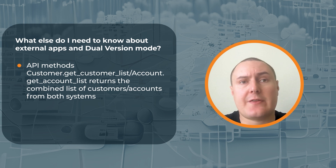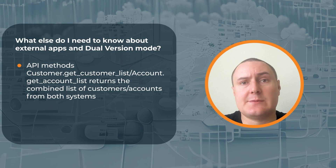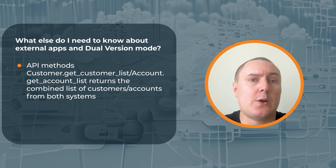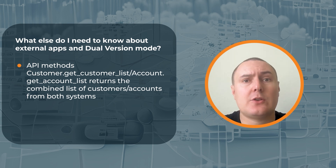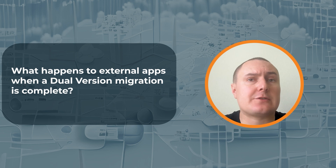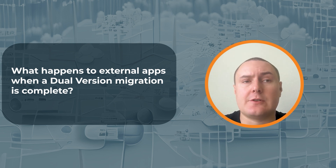Your application should then filter those records on your end by the value of the dual-version system attribute. That attribute can be either source, target, or normal — meaning a system that is not in dual-version mode. However, if you just want to get a list of all active customers regardless of the system they reside in right now, you can simply add the appropriate attribute to your request. And finally, here is one last question about external applications.